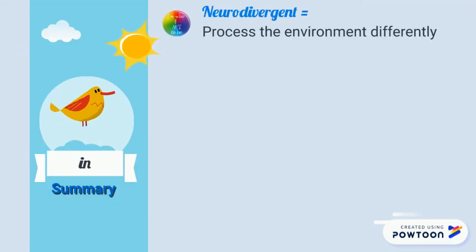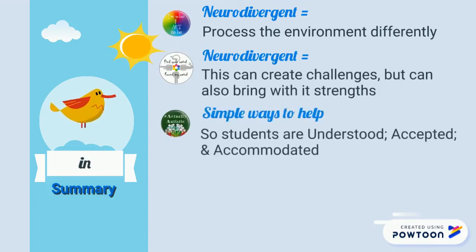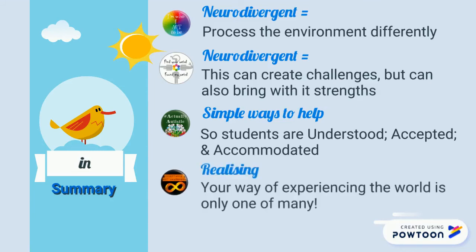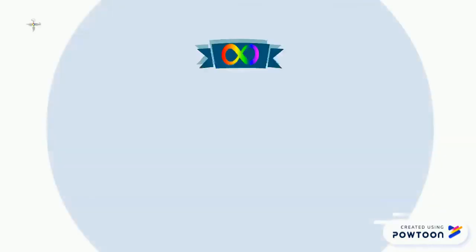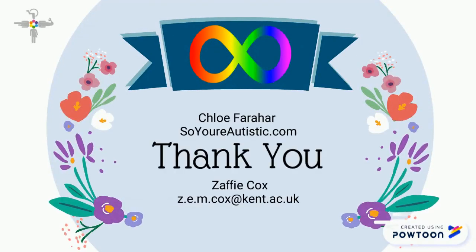Neurodivergent people process the environment differently to those who are neurotypical. This can create challenges, but neurodivergence can also be a strength. There are simple ways we can help students so that they are understood, accepted and accommodated — and part of this is realising your way of experiencing the world is only one of many. Thank you for watching this brief introduction to Neurodiversity Inclusive Teaching.